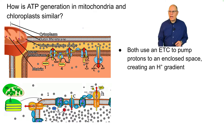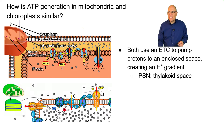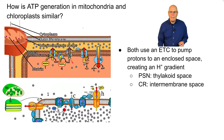Both of these processes use an electron transport chain to pump protons to an enclosed space, creating a proton gradient. In photosynthesis, here's the electron transport chain — we're pumping protons from the stroma to the thylakoid space. In cellular respiration, we're pumping protons from the matrix to the intermembrane space.